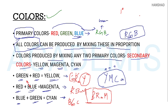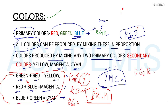A secondary color is produced by mixing any two primary colors. The combinations are: green and red make yellow, blue and red make magenta, and blue and green make cyan.